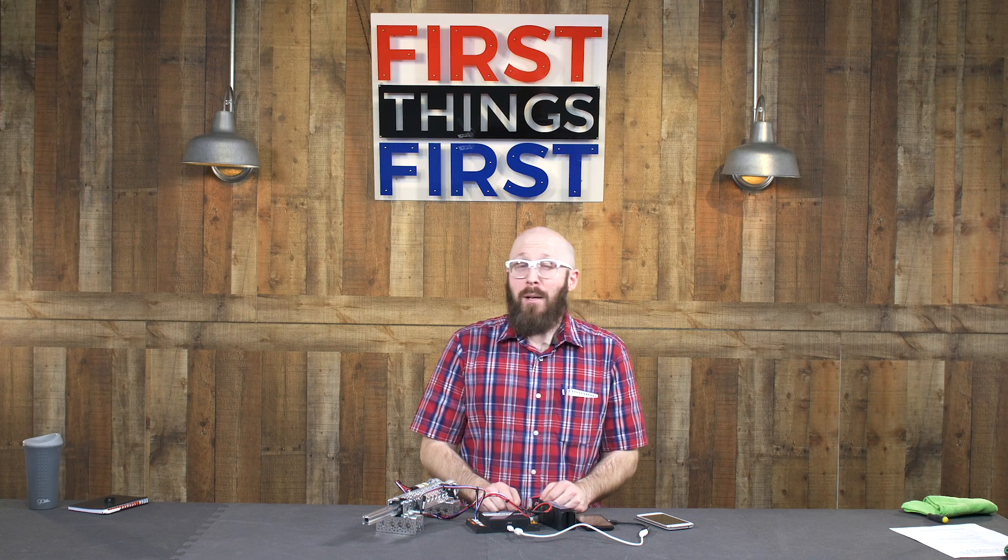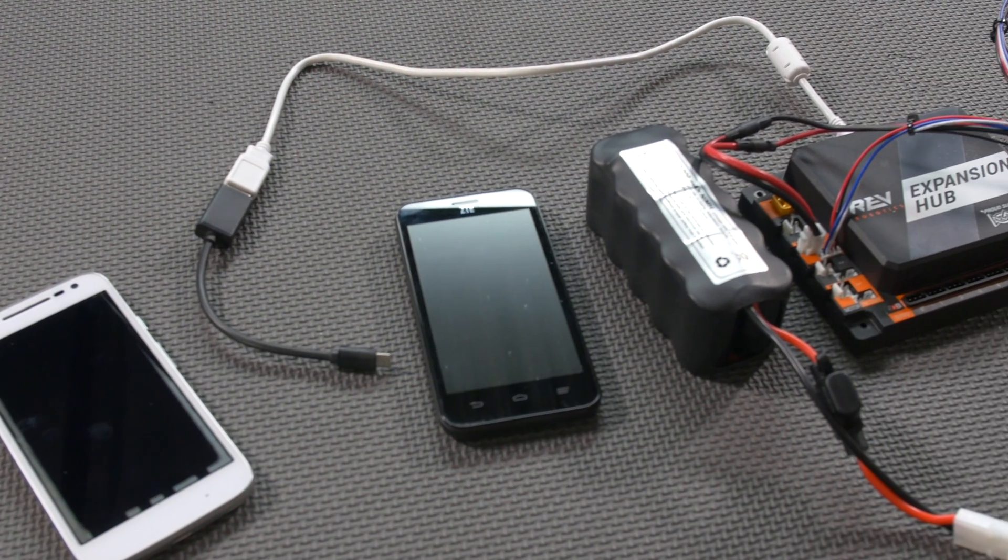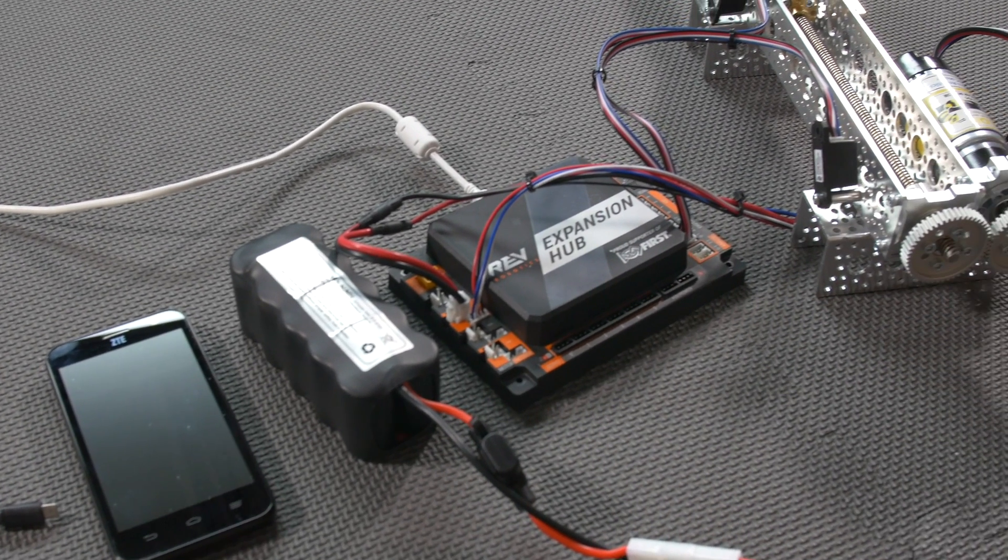Hey guys, this is Jason, and in this episode of First Things First, I wanted to take a look at using the encoder on a Yellow Jacket Series motor in combination with a Rev Expansion Hub.